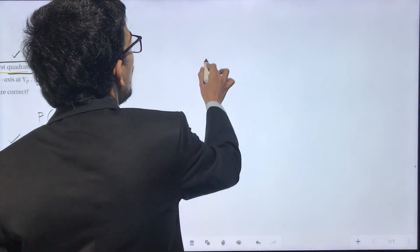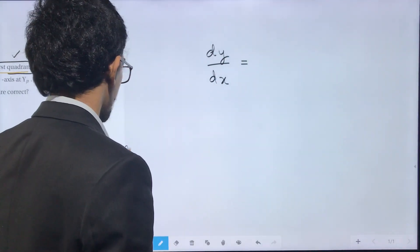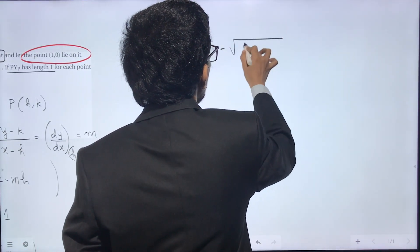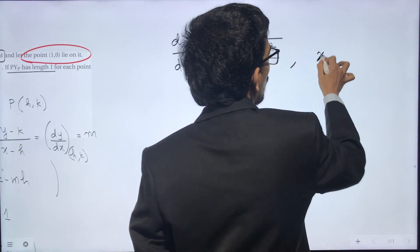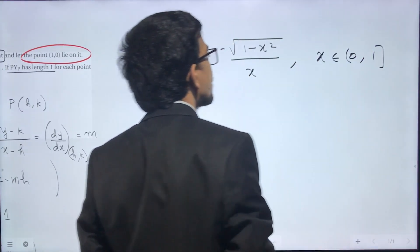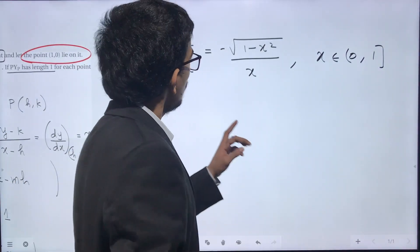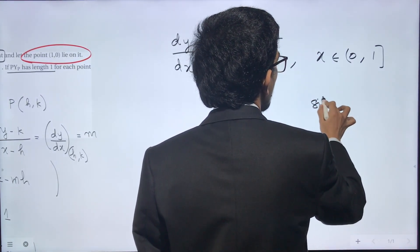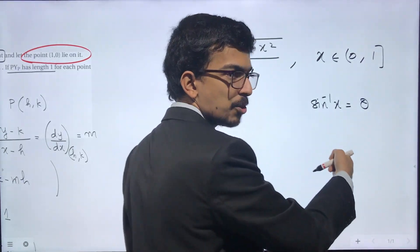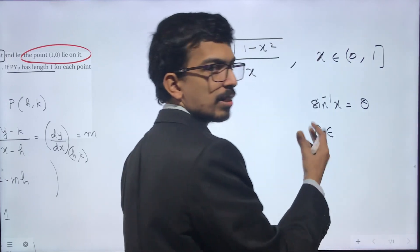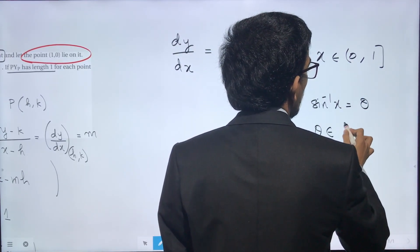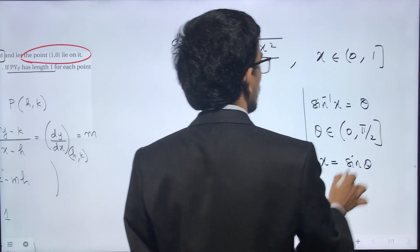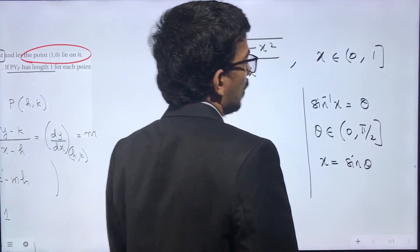Our differential equation is dy/dx = −√(1 − x²)/x, with domain (0, 1). To solve this, make the substitution sin⁻¹(x) = θ. The range of θ will be (0, π/2), and since sin⁻¹(x) = θ, we have x = sin θ.